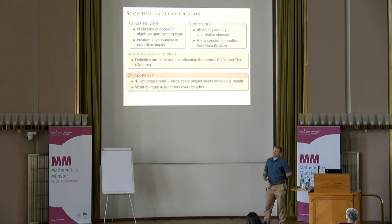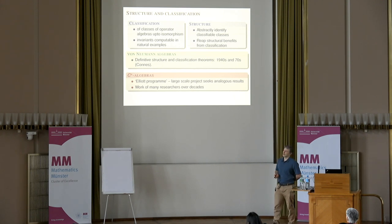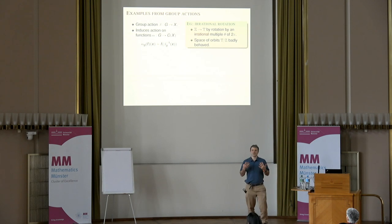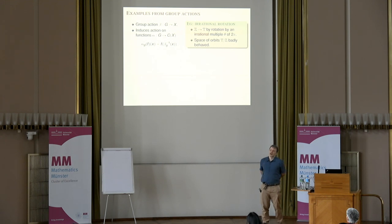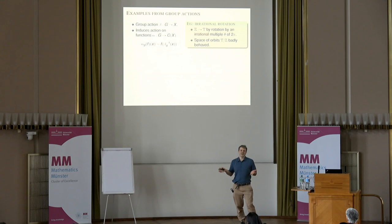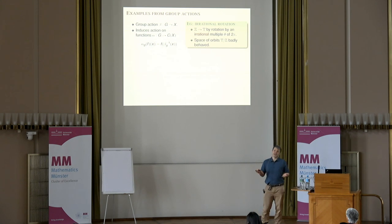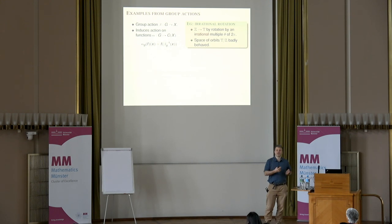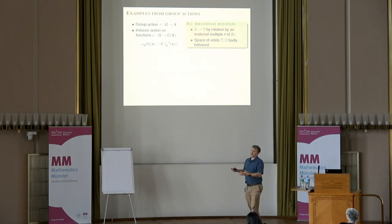Before all of that, we should have some examples. I cheated and defined operator algebras as collections of operators on a Hilbert space, closed under multiplication, vector space operations, adjoint, and the appropriate topology. If you've got your favorite mathematical object and can find a way of representing it on a Hilbert space as families of operators, you'll naturally get an operator algebra. If you like groups, look at unitary representations, take the algebra they generate, and you'll get a C*-algebra and a von Neumann algebra. If you like group actions, you can do the same.